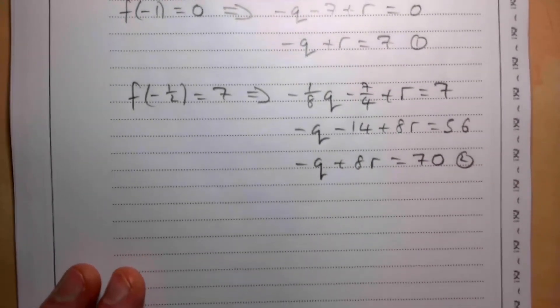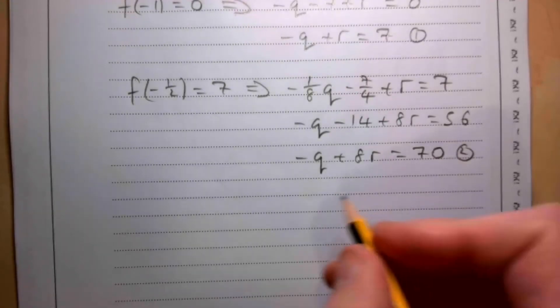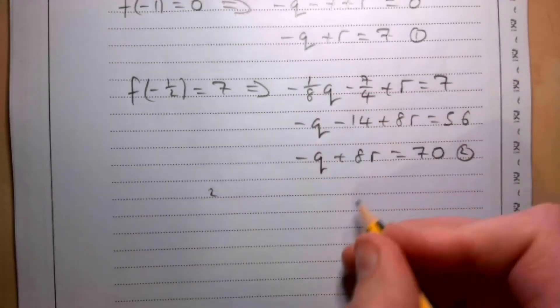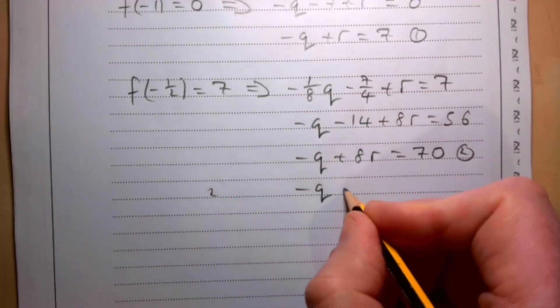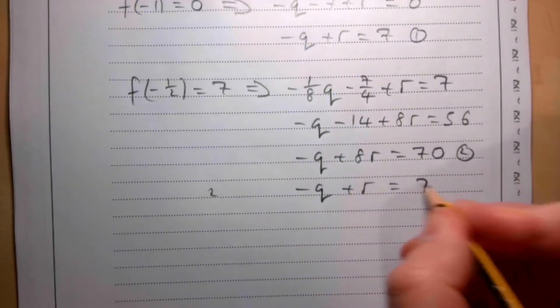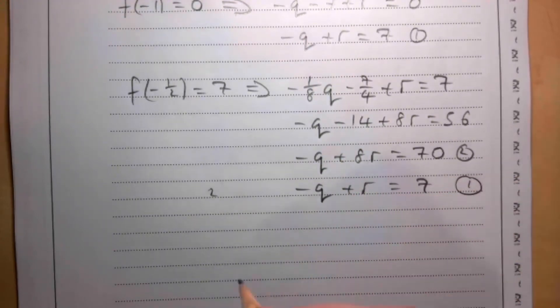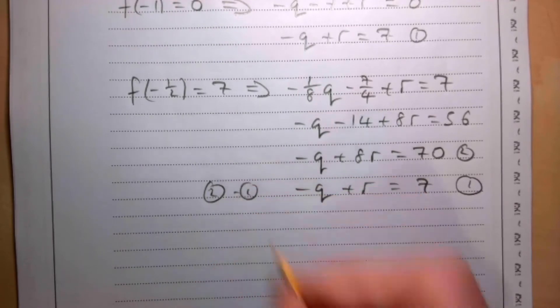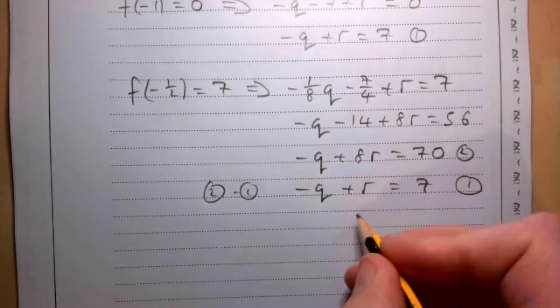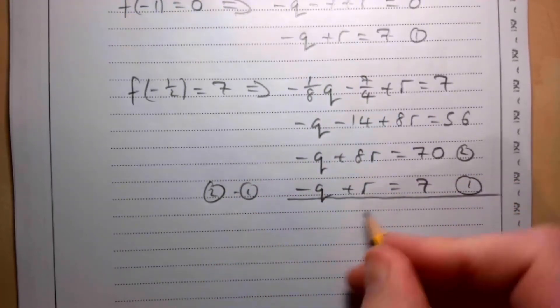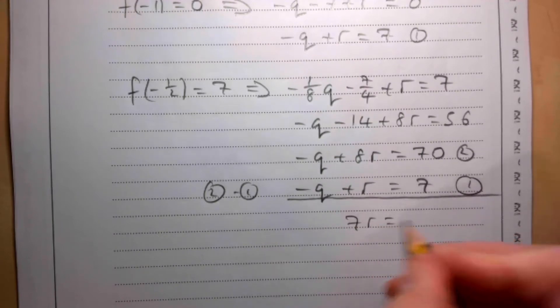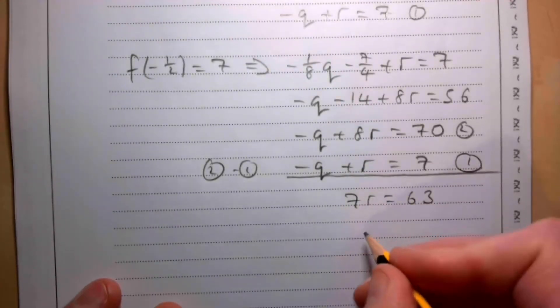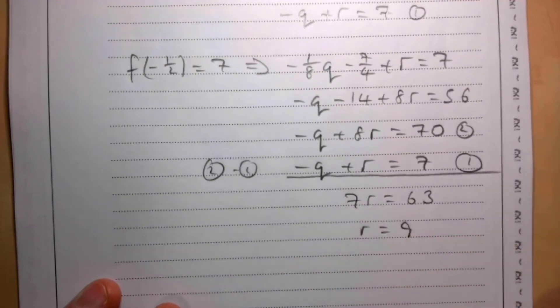That's equation 2. If I subtract these two, writing one below the other to make it straightforward, -q + r equals 7 is equation 1. If I do 2 take away 1, the q's disappear, and I get 7r equals 63, which means r is 9.